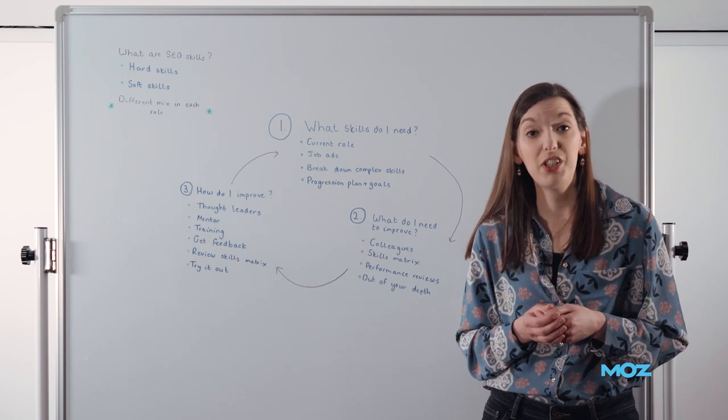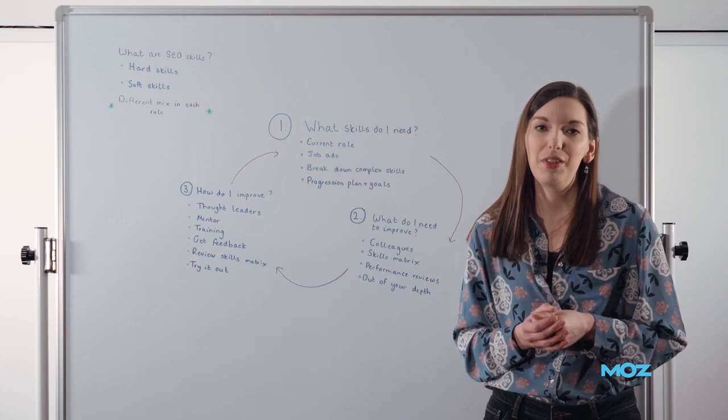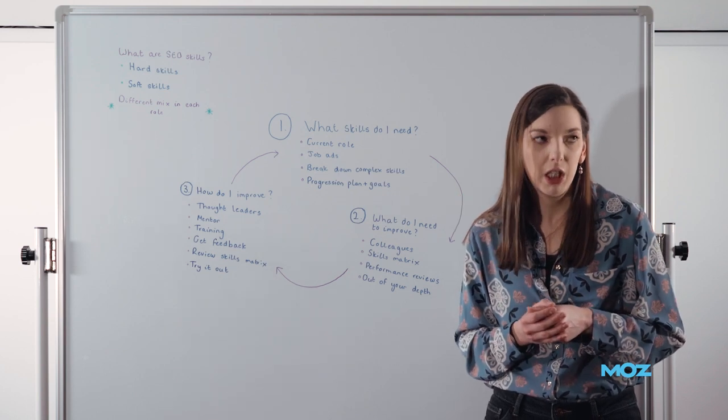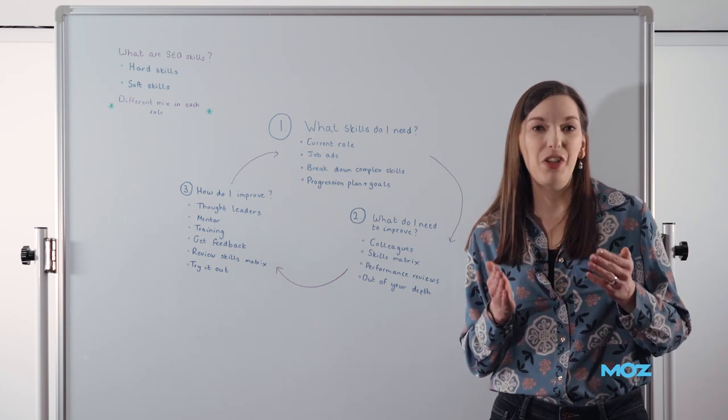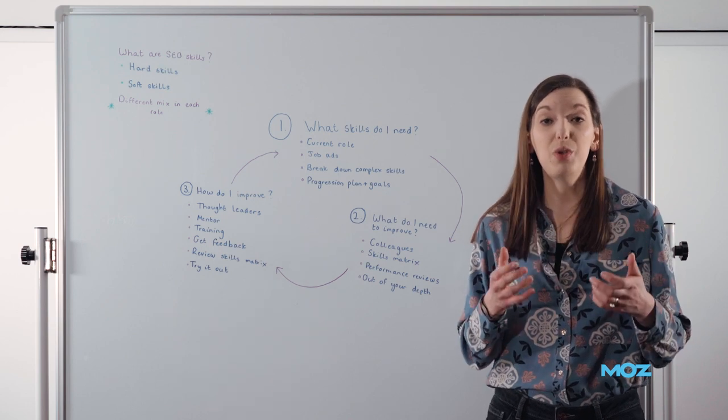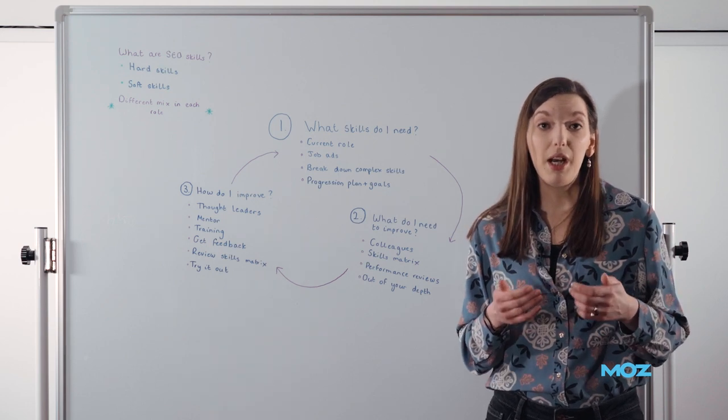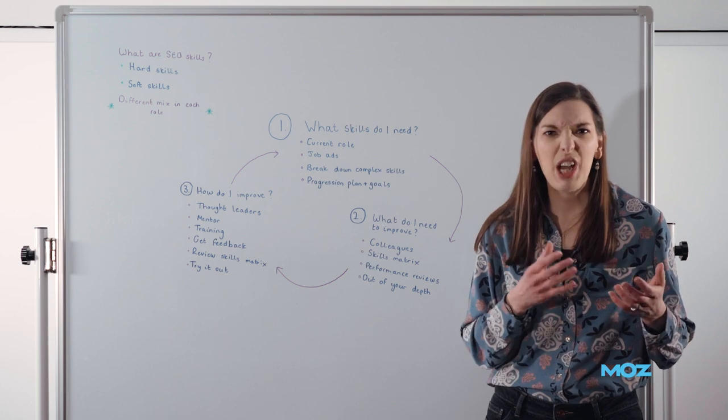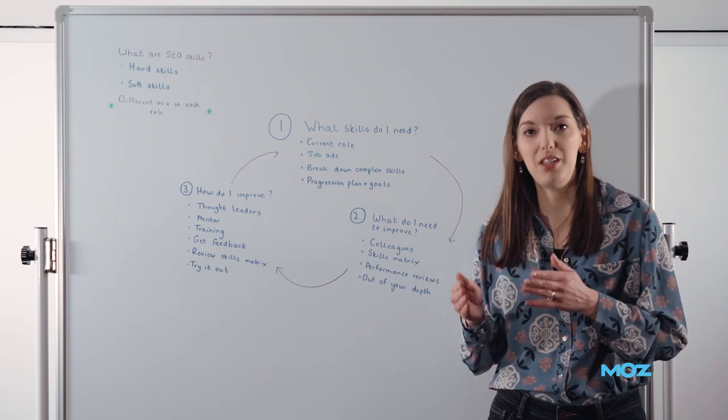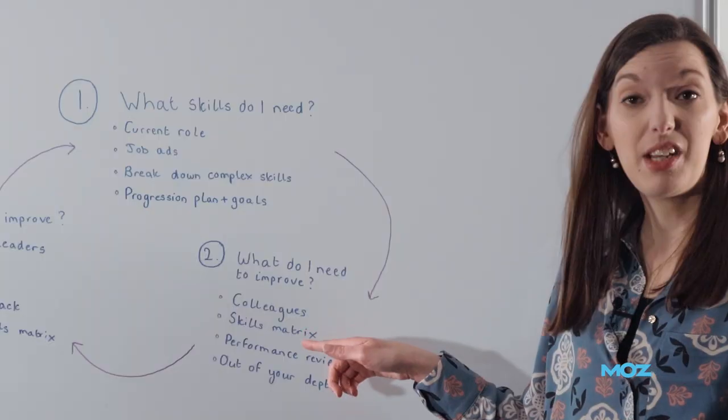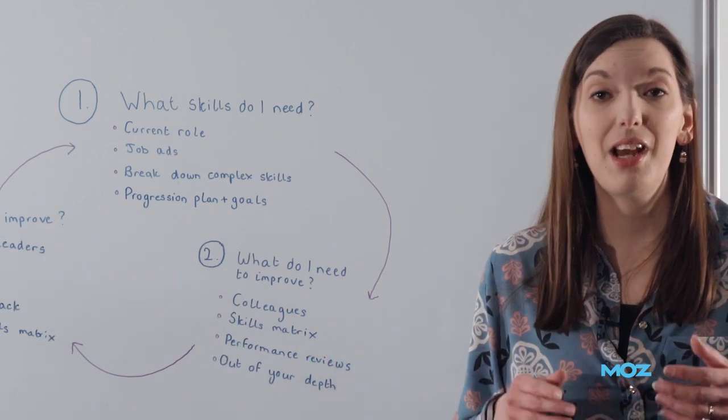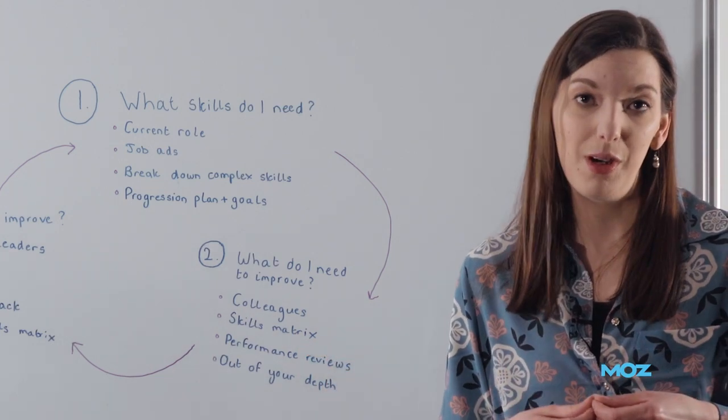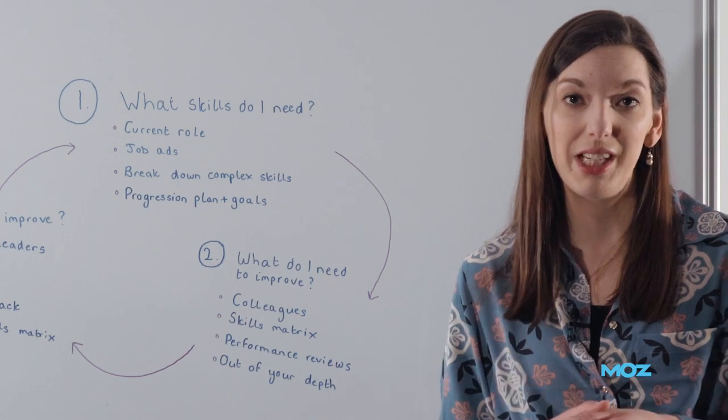So perhaps put together a bit of a survey for them because, you know, everyone loves impromptu surveys when they're really busy at work. But ask them anonymously to feedback on the skills that you know you need to have for your role and ask them to mark you out of, say, five or ten on how competent they think you are. And also do it yourself. This is your skills matrix. This is how you identify where you think you are in your competencies at these particular skills.